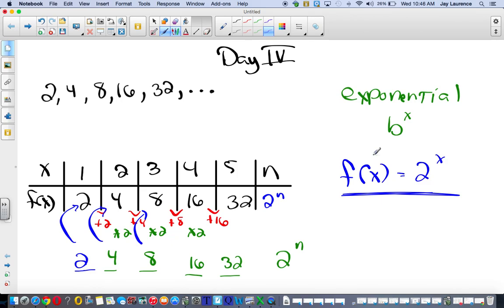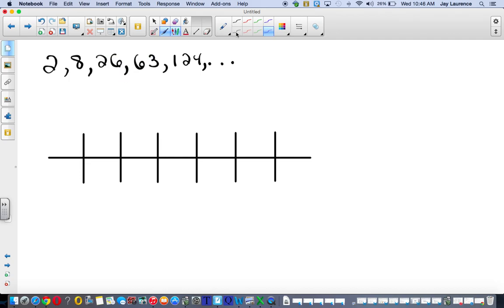When the differences or even the original numbers are being multiplied by the same amount every time, like a constant ratio, it's exponential. So let's try another one. Here, I got my table.